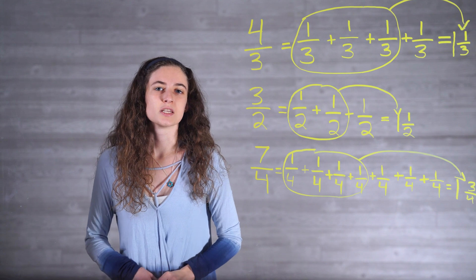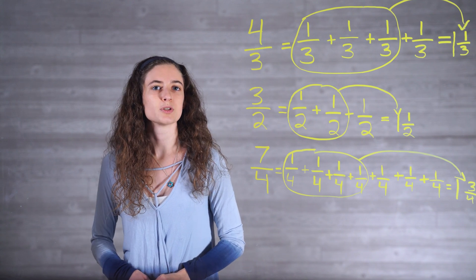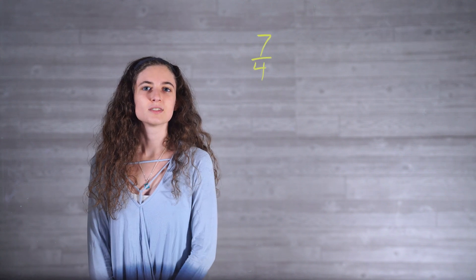This process works in reverse to convert a mixed number to an improper fraction. For example, if we start with the mixed number 1 and 3/4 and want to convert it to an equivalent improper fraction, we look at the whole number — in this case, 1. This whole number represents the denominator in the fraction, which is 4, so the 1 is equal to 4/4. When we combine these 4 fourths with the 3 fourths, we end up with 7/4 total.